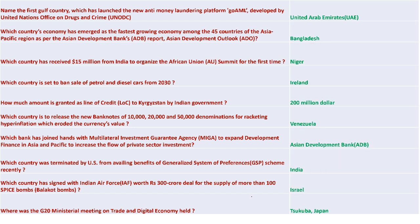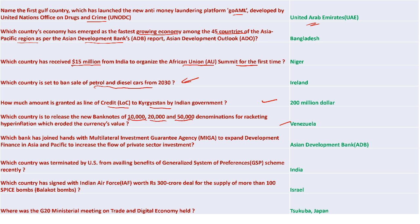UAE is the first Gulf country to launch the new anti-money laundering platform GoAML, developed by the United Nations Office on Drugs and Crime. Bangladesh emerged as the fastest growing economy among 45 countries of the East Asia-Pacific region as per ADB. Niger was the country to which India gave 15 million to organize the African Union Summit for the first time. Ireland is set to ban petrol and diesel cars from 2030. 200 million dollars was granted as a line of credit to Kyrgyzstan by the Indian government. Venezuela is set to release 10,000, 20,000, and 50,000 denomination notes to tackle hyperinflation.